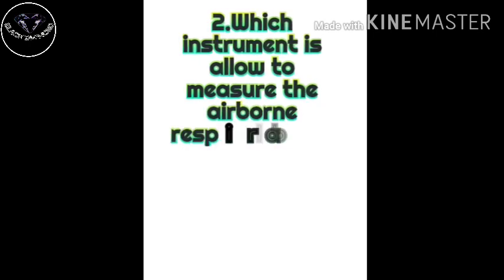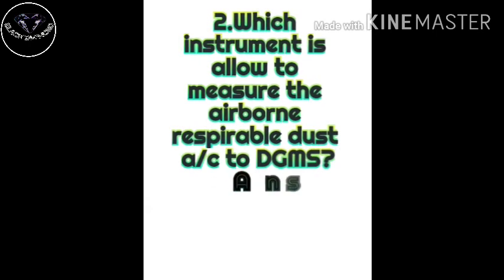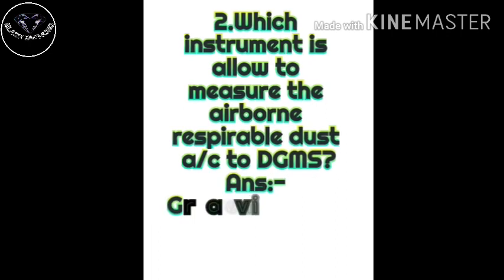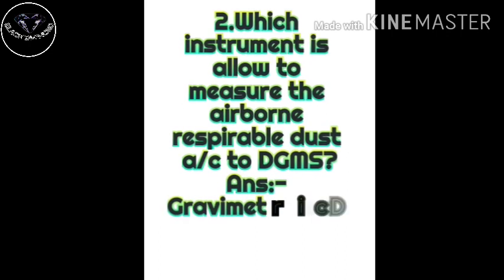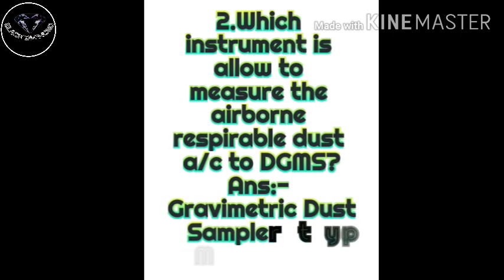DGMS के अनुसार श्वसनीय धूल की जाँच करने के लिए कौन सा यंत्र उपयोग में लिया जाता है? इंडिया में जो instrument लिया जाता है, वो है — [instrument name to be noted]।